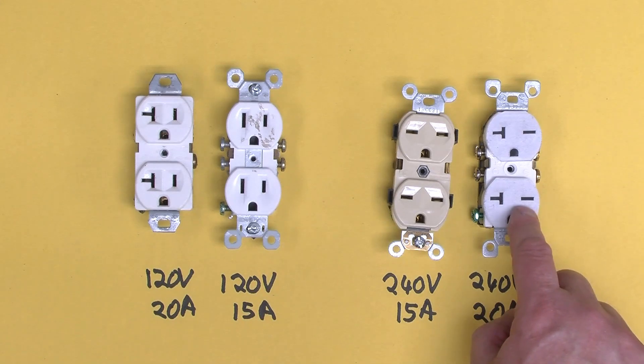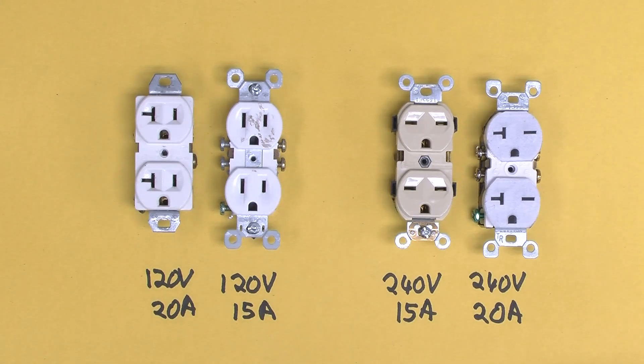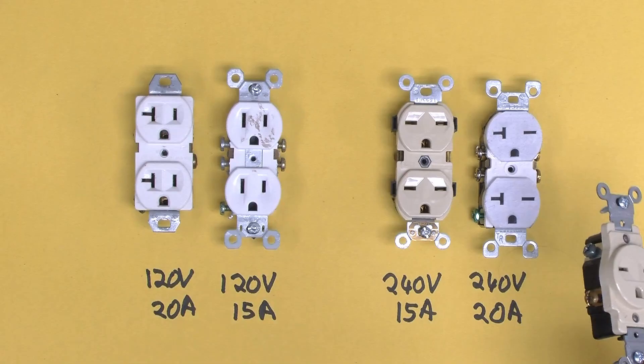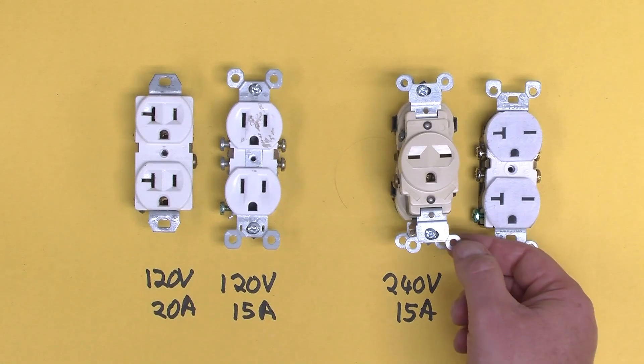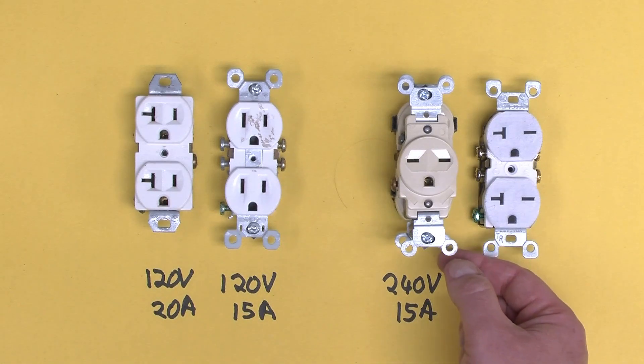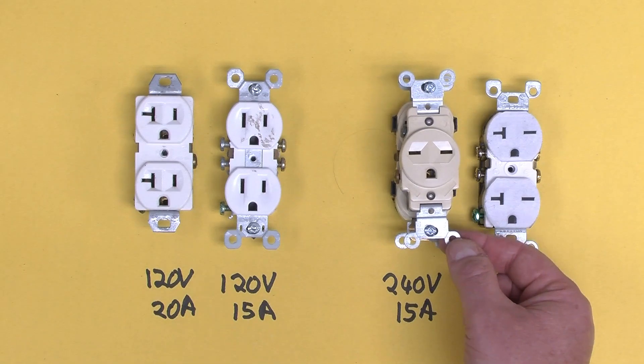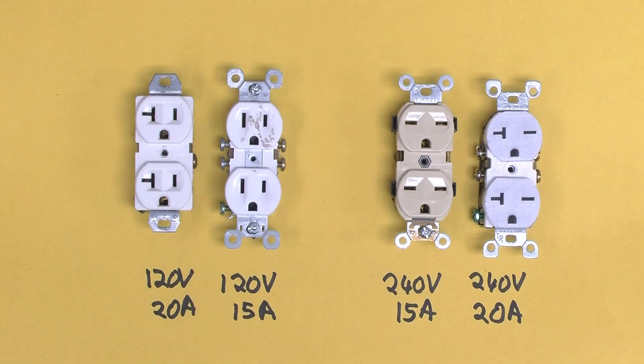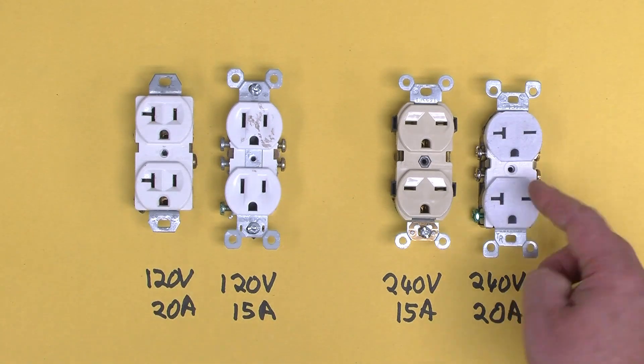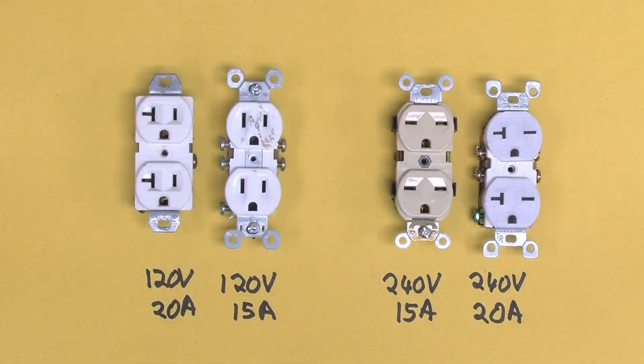I should point out that these two duplex receptacles are actually somewhat rare, and that's because they are most often replaced by one of these receptacles, a single outlet receptacle. Typically, if you're installing a 240 volt line somewhere in a North American building, it's for one high-powered device. Same applies to the 20 amp version, and in fact, that's what I have set up for my compressor, as you can see here.